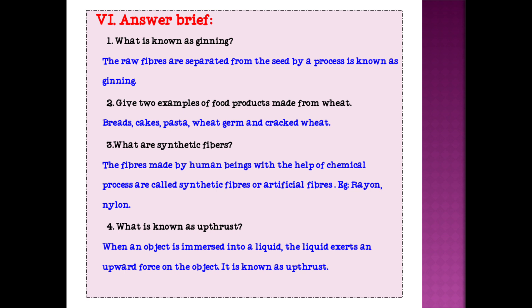Third question: what are synthetic fibers? The synthetic fibers made by human beings with the help of chemical process are called synthetic fibers or artificial fibers. Example: rayon, nylon. What is known as upthrust? When an object is immersed into a liquid, the liquid exerts an upward force on the object. It is known as upthrust.